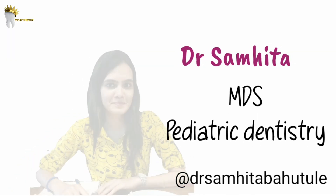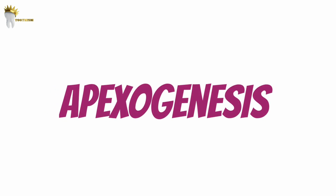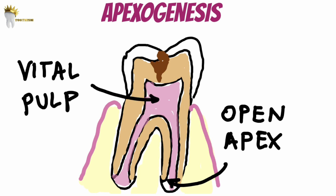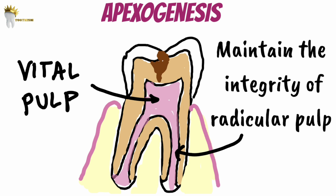In today's video, let's start with apexogenesis. This is done in young permanent teeth. Apexogenesis is the treatment of a carious or traumatized tooth which has vital pulp. This is done to permit continued growth of the root and the apex. The rationale of this procedure is to maintain the integrity of the radicular pulp tissue while allowing root growth and formation.